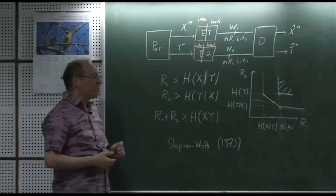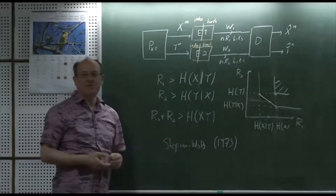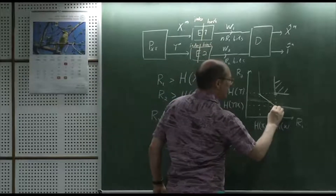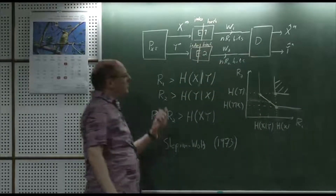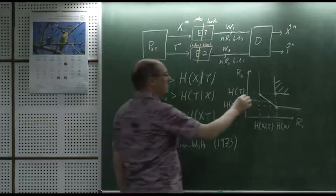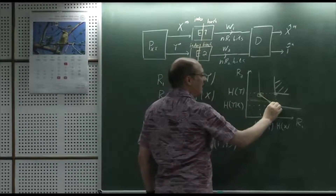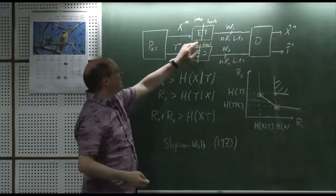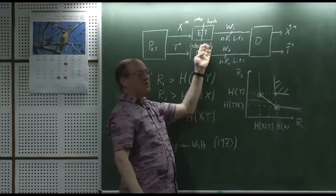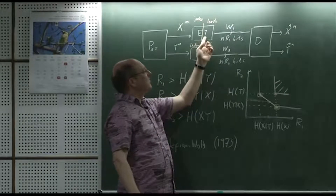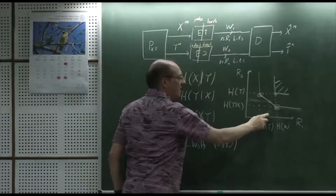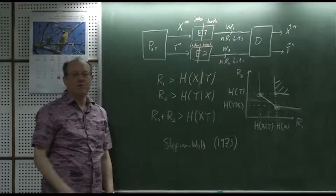The Slepian-Wolf paper appeared in the IEEE Transactions on Information Theory in 1973 and won the Information Theory Society Paper Award. Interestingly, the original paper focused on the corner points rather than our approach, and used linear codes to compress from H(X) down to H(X|Y).